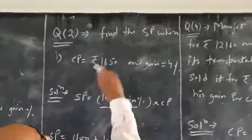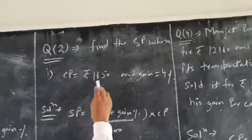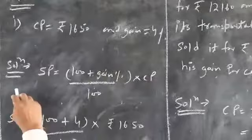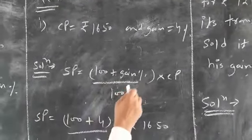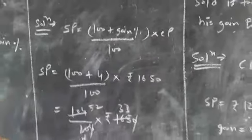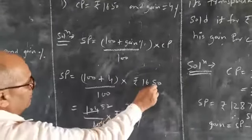Question number 2. Find the SP when CP equals 1650 and gain equals 4%. Therefore, solution: SP equals 100 plus gain percent upon 100, into CP. Therefore, SP equals 100 plus 4 upon 100, into 1650.